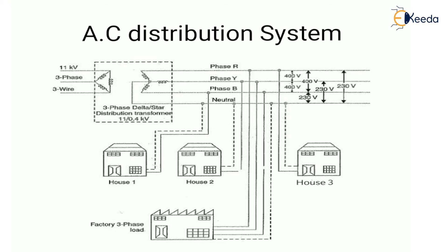In secondary distribution, the electrical power at 11 kV is delivered to the distribution substation, which is located near the localities of the consumers. Here the voltage is stepped down to 400 V, 3-phase 4-wire. The voltage between any two phases is 400 volts, and between any phase and neutral is 230 volts — single-phase domestic loads are connected at 230 V, and three-phase motor loads are connected at 400 V.